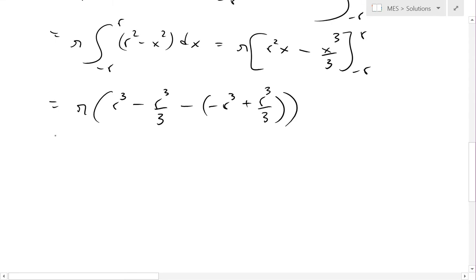And now we just subtract, keep simplifying this. This is going to be pi, and now this is going to be, we have basically r cubed, this is going to be positive, well negative r cubed over 3, plus r cubed minus, this is going to be r cubed over 3.